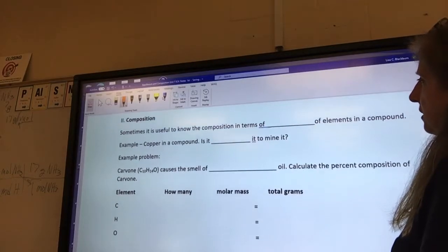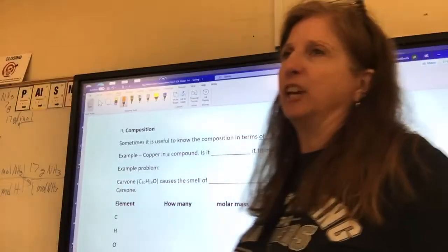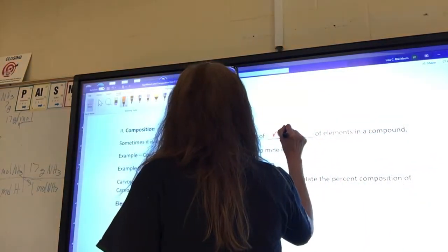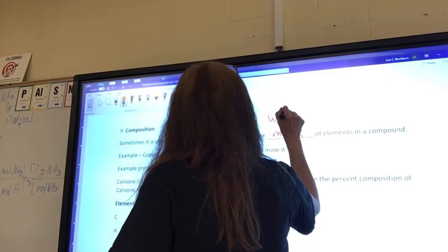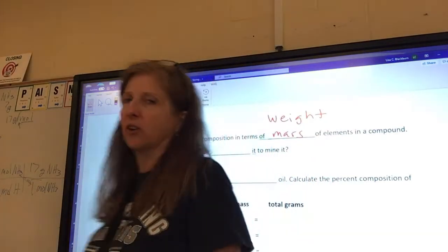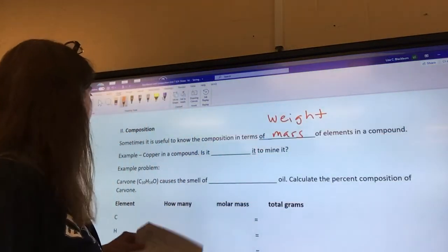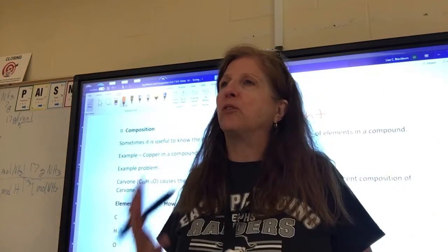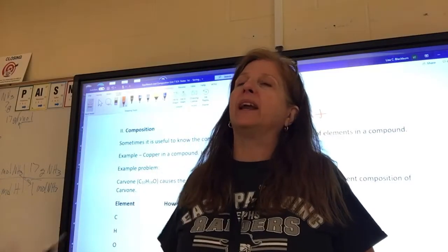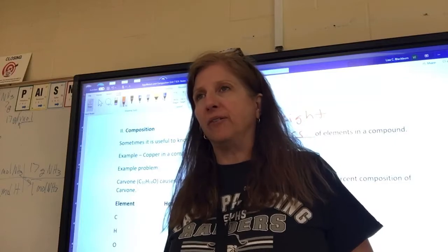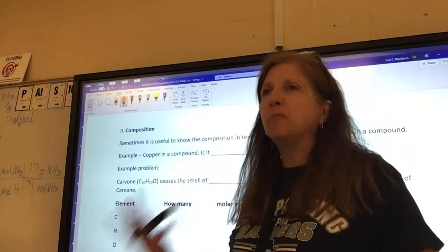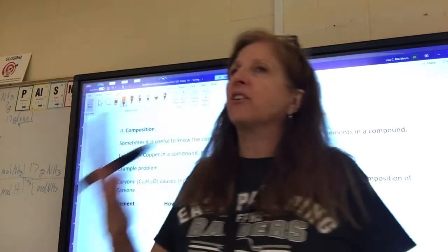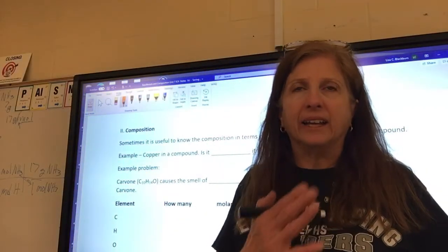Number two, composition. Sometimes, it is useful in chemistry to know the composition of a compound in terms of the mass. And in reality, we usually use weight. Remember, weight and mass are kind of the same thing on Earth. The mass of the elements in the compound. For example, you found some copper ore. And you want to know, would it be profitable for you to mine that ore? Or is it worth it? Or would mining it cost too much for the profit?